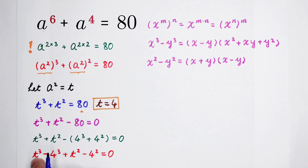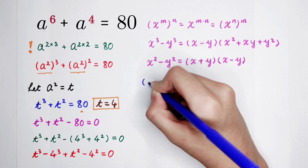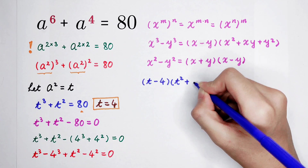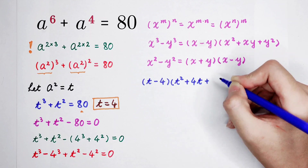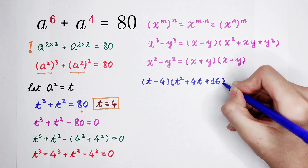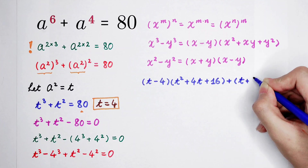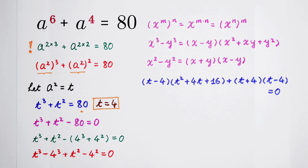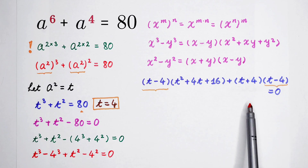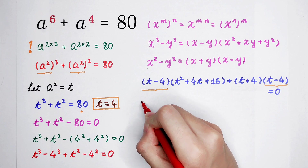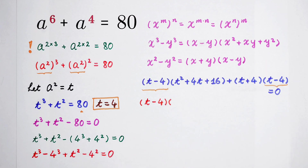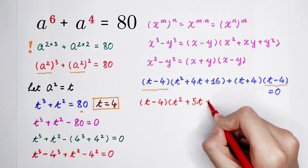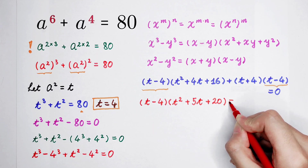Factorizing: t cubed minus 4 cubed gives (t minus 4)(t squared plus 4t plus 16). Then t squared minus 4 squared gives (t plus 4)(t minus 4). Since (t minus 4) appears in both terms, we factor it out: (t minus 4)(t squared plus 5t plus 20) equals 0.